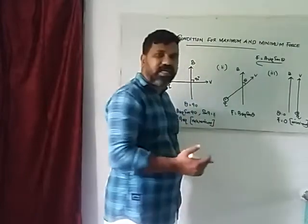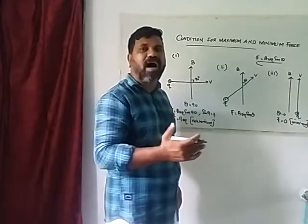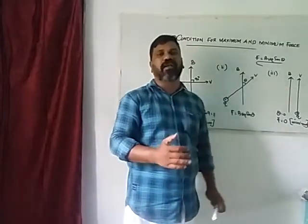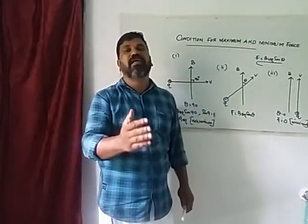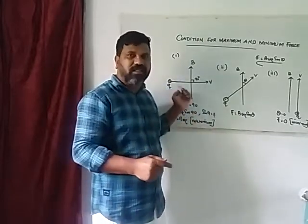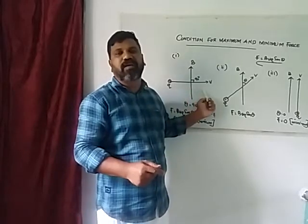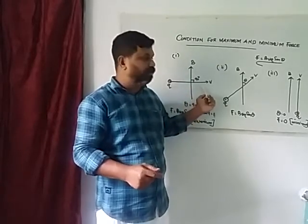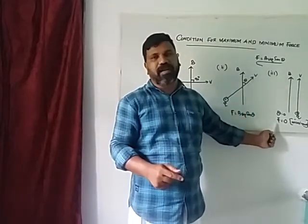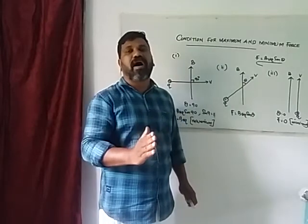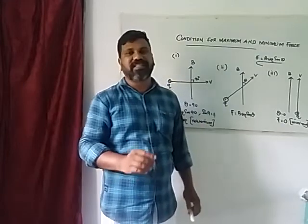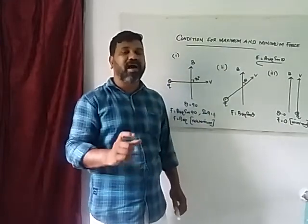When the charge is entering in a direction parallel to the magnetic field, the force is minimum — in fact, the force is zero. When the charge moves parallel to the magnetic field, the force is minimally zero. This is the condition for maximum and minimum force when a charge enters a magnetic field.